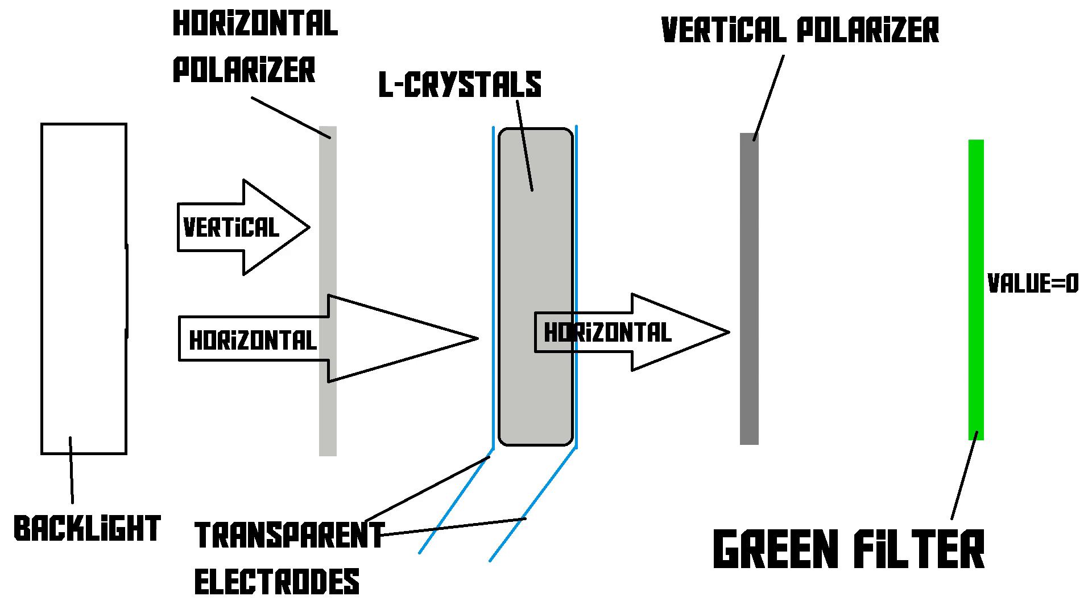The light then goes on, and it goes to the vertical polariser. The liquid crystals, we'll get to that later on. But the light goes to the vertical polariser, and now there is a problem. Because the horizontal polariser just blocked all of the vertical light beams. So there are only horizontal light beams left. And those are all going to be blocked by the vertical polariser, so no light will eventually reach the green filter. So our green sub-pixel will be black and will be off.